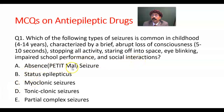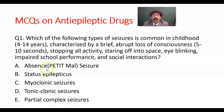Choice A: absence seizure. B: petit mal seizure. C: status epilepticus. D: myoclonic seizures. E: tonic-clonic seizures. F: partial complex seizures. The answer is A, that is the absence seizure. Impaired school performance occurs because the student cannot hear the teacher's directions, and there is also lack of social interaction. Some people may think it is mental retardation, but it is the absence seizure.